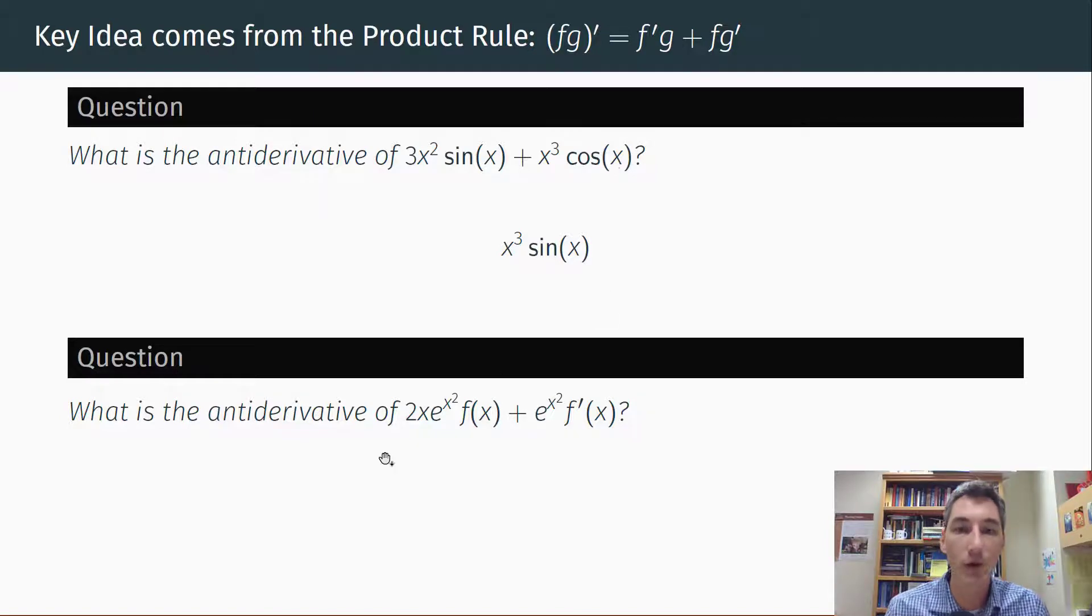Here's another slightly more complicated example. Well, here we got f and f'. That could be anything. What's this g? Well, e^(x²), what's the derivative of that? Well, it would be 2xe^(x²). So this is sort of like g'f plus gf'. Well, the antiderivative would be f times g. Well, f is f and g is e^(x²). So it would be e^(x²)f(x).